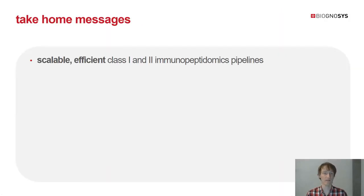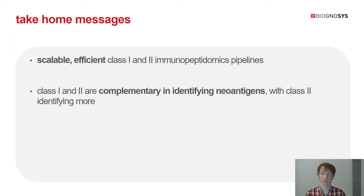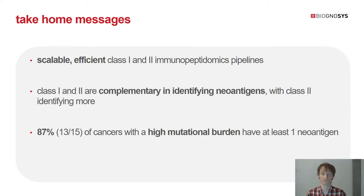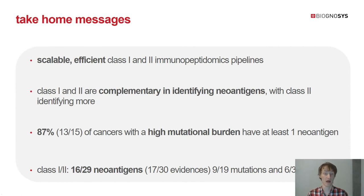To summarize, we have generated a scalable, efficient class 1 and class 2 immunopeptidomics pipeline which generates great quality data. We find class 1 and class 2 to be complementary in identifying new antigens, at least in colorectal cancer, and we find more new antigens mapping to class 2. For almost all cancers with a high mutational burden, we could find at least one new antigen, and overall we identified more than 40 new antigens across as few as 20 samples.